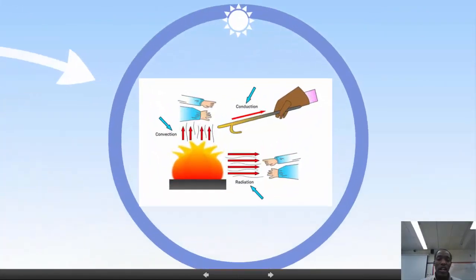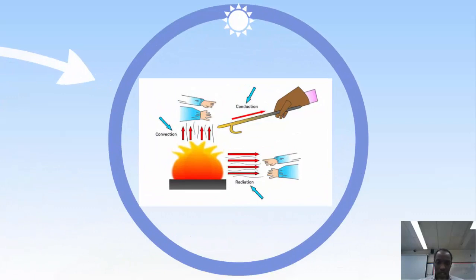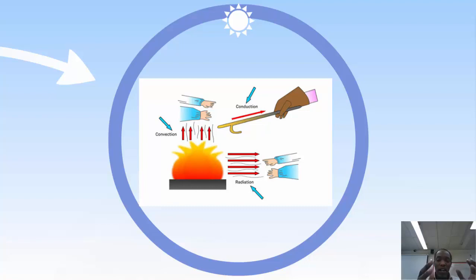As a reminder: conduction involves direct touching of the heat source. In the rod example, the rod touches the flame, heats up, and through a chain reaction the molecules start moving faster and faster. Remember, temperature measures the average kinetic energy of an object, so as molecules move faster, heat travels up the entire rod.